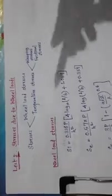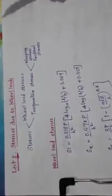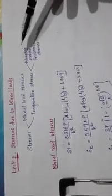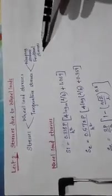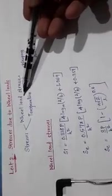Whenever we talk about the stresses, there will be two types. One is the wheel load stresses and another is the temperature stresses which we are going to see further. In temperature stresses, again you have the warp stresses and frictional stresses. Now, we are only dealing with the wheel load stresses. Wheel load stresses are given by three formulas: one for interior, edge and the corner.